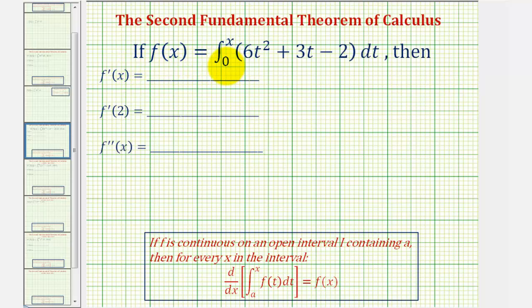If f of x equals the integral of 6t squared plus 3t minus 2 from 0 to x, then we want to find f prime of x, f prime of 2, and f double prime.